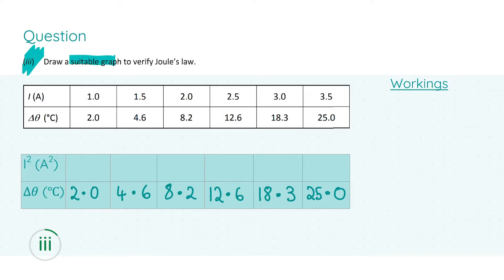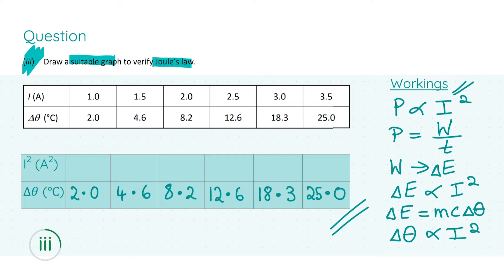In part three, we're asked to draw a suitable graph to verify Joule's law. I've got a workings panel over here, and also I've drawn out a brand new table, which I've drawn out here, which I'd recommend you to do in your exam booklets, to make sure that you know exactly what values that you're going to put into your graph, so that it is clear in your mind what points you're plotting. Just in the workings panel, we noted that power is directly proportional to the current squared. Now, power by definition is equal to the work over time, and work is related to energy, or the change in energy. So that means the change in energy is directly proportional to the current squared.